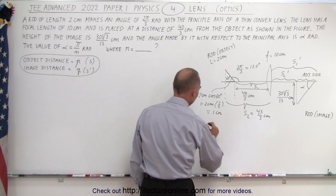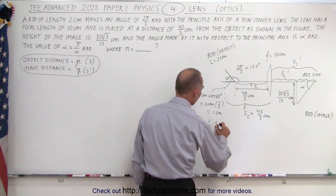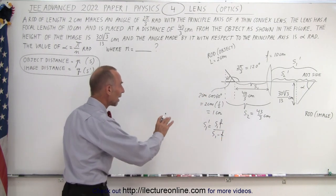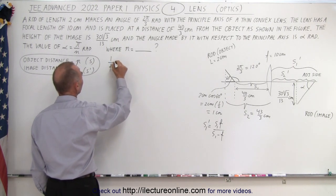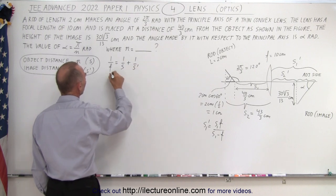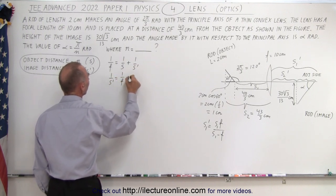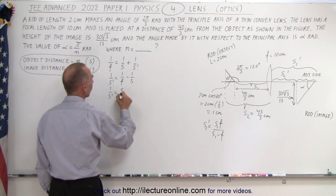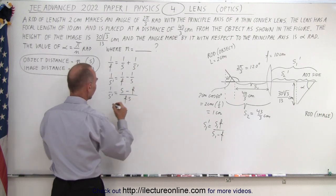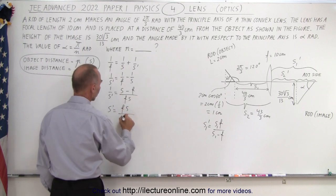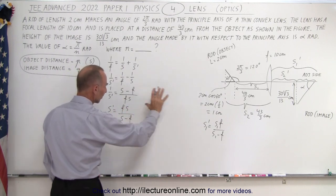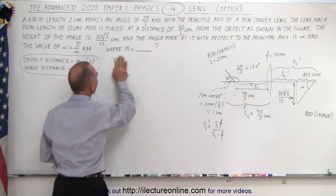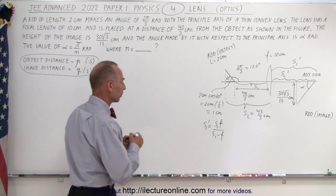The equation we use is s prime = sf divided by (s − f). If you don't remember that, you can derive it from 1/f = 1/s + 1/s′, which gives 1/s′ = 1/f − 1/s. The common denominator is the product of the two, giving 1/s′ = (s − f)/(fs), and inverting gives s′ = fs/(s − f).